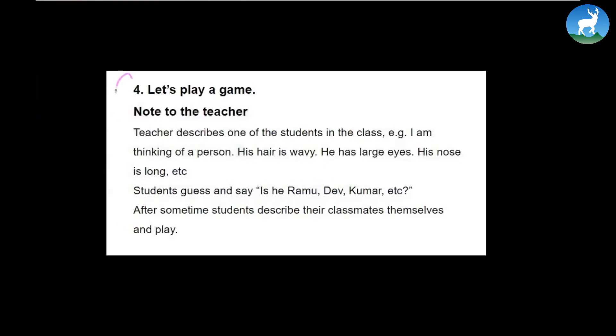Now this is something a teacher can do, a very simple game. Teacher describes one of the students in the class, like for instance I'm thinking of a person. His hair is wavy, he has large eyes, his nose is long, etc. And the rest of the students then guess the particular person. They might ask questions: Is he Ramu or is he Dev or Kumar or Rajkumar or Devanand, whatever. And then the game goes on. But as you describe the person, you cannot name him or name her. You have to describe how he looks or how she looks.